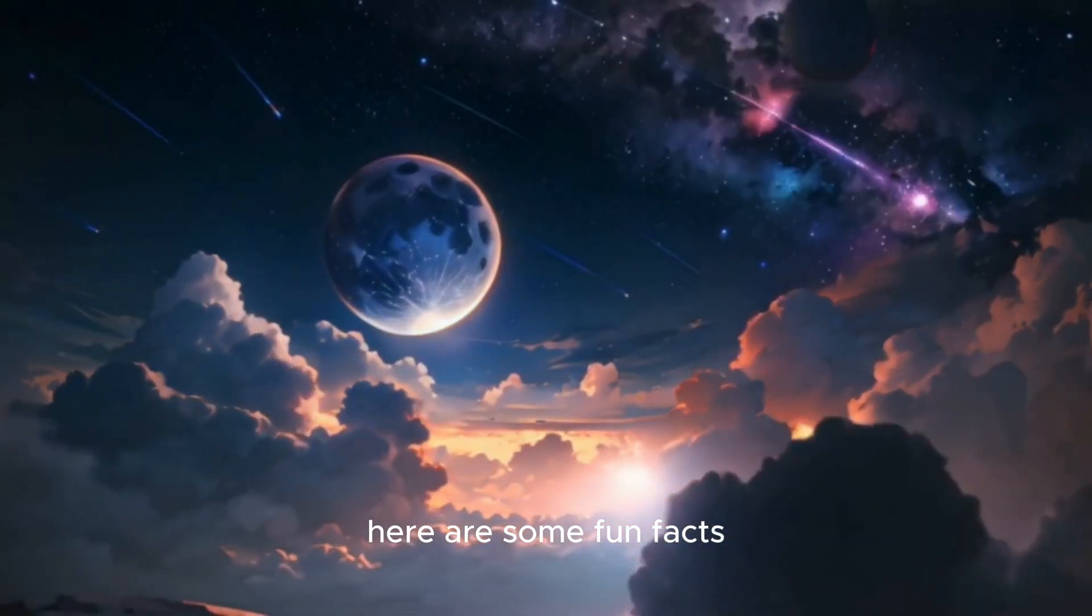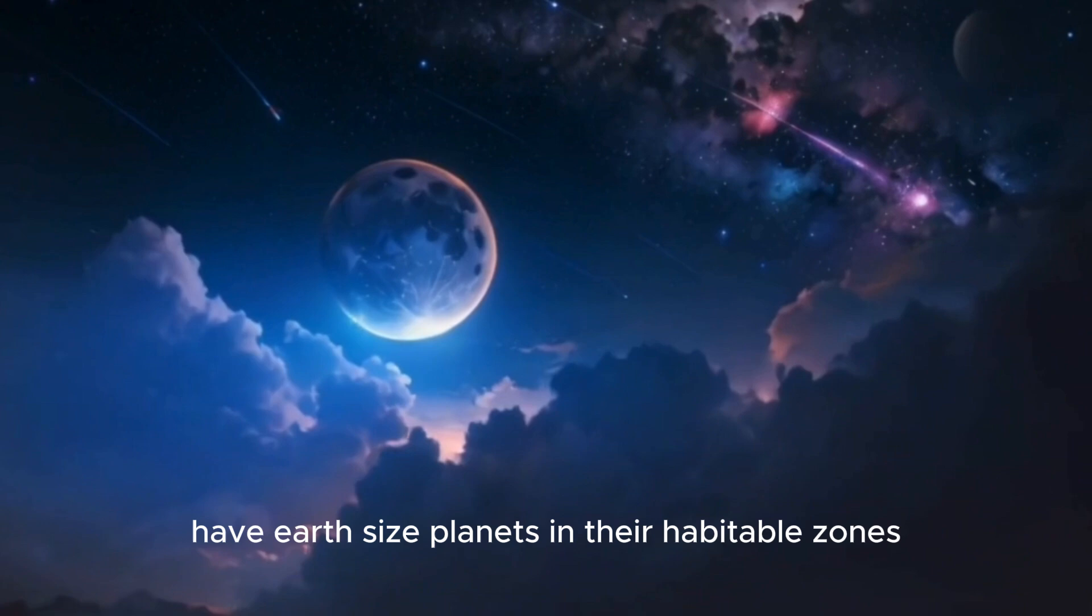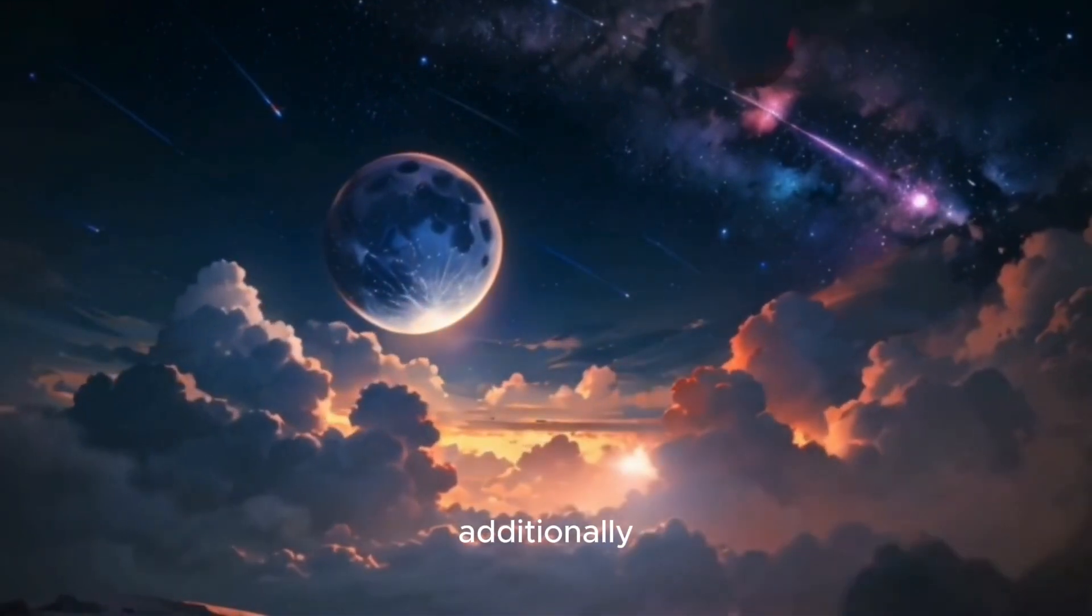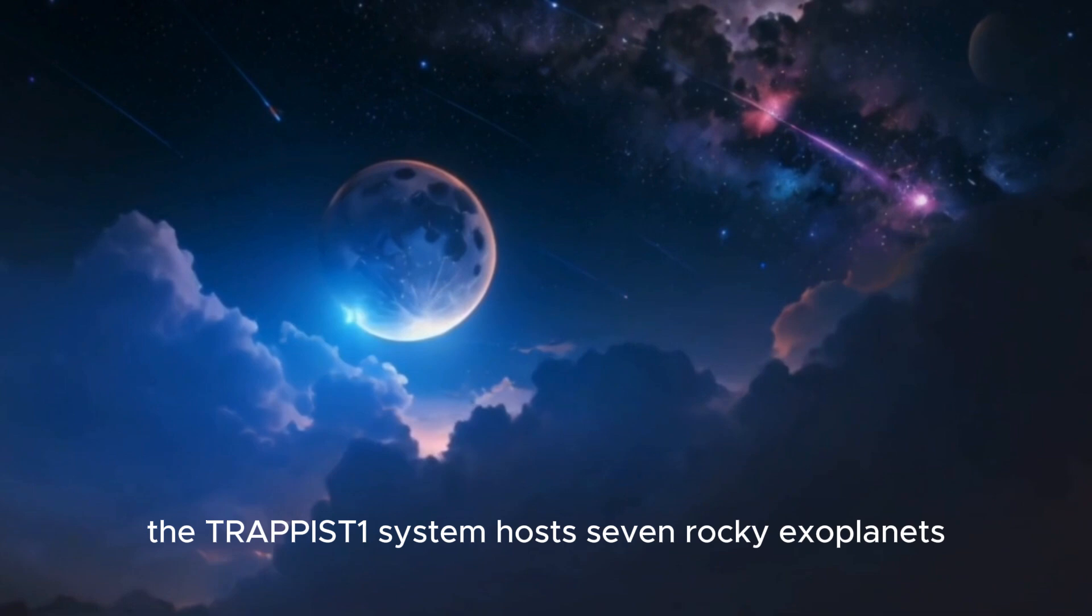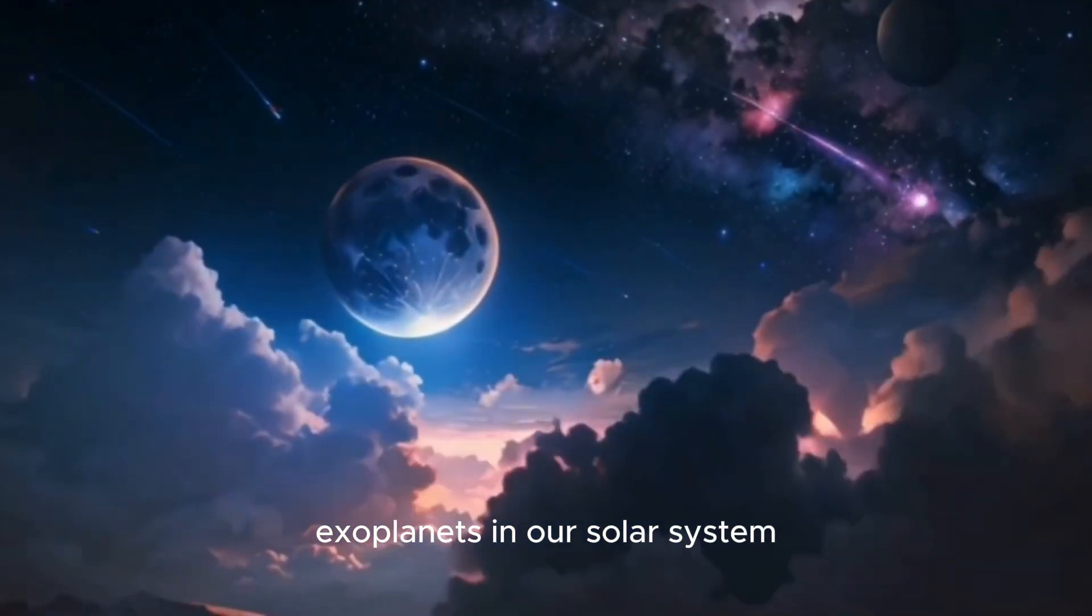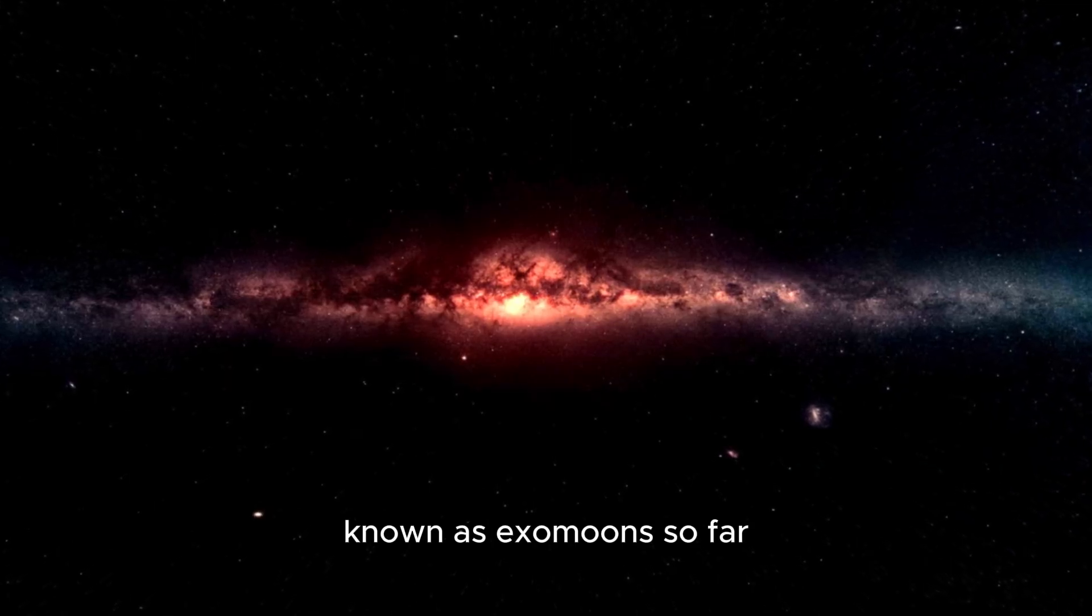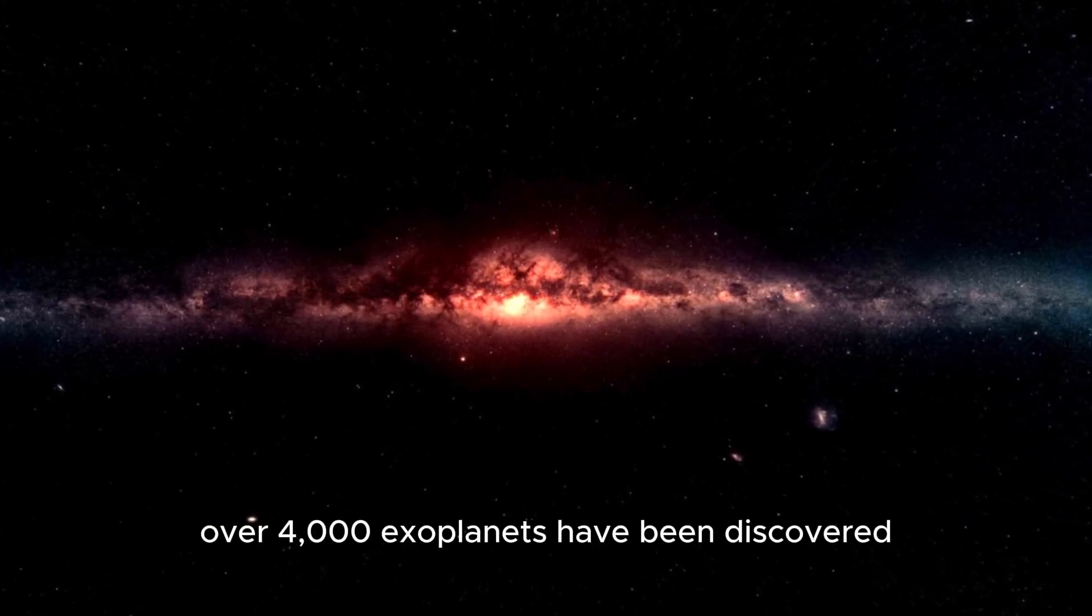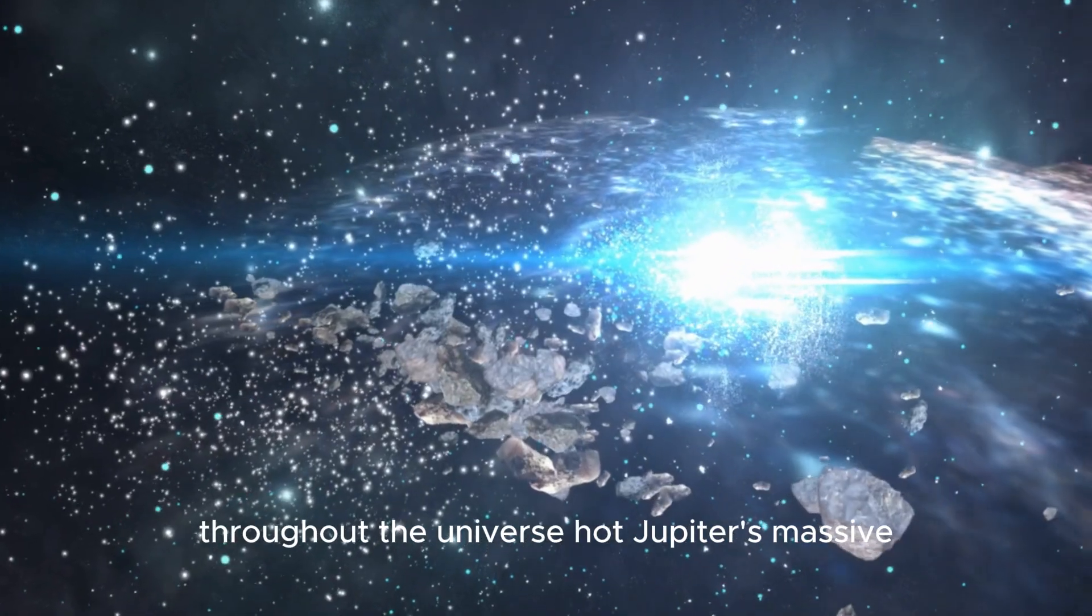Here are some fun facts. Over 22% of sun-like stars have Earth-sized planets in their habitable zones. Additionally, the TRAPPIST-1 system hosts seven rocky exoplanets, some with water on their surfaces. Exoplanets in our solar system can also have natural satellites known as exomoons. So far, over 4,000 exoplanets have been discovered, showing that they exist in abundance throughout the universe.